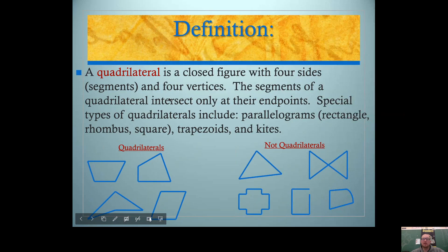Before we do that, we better know what a quadrilateral is. A quadrilateral is a closed figure with four sides, or segments, and four vertices.